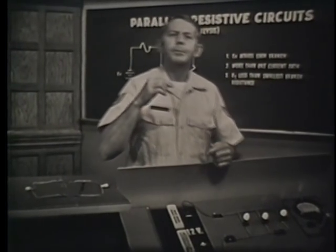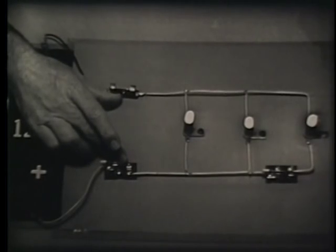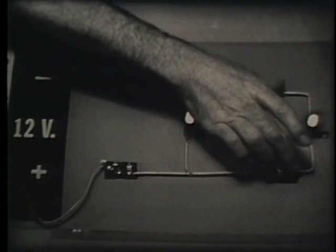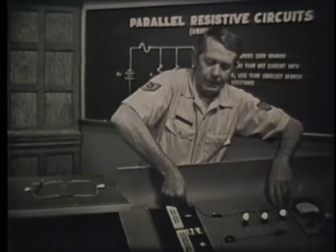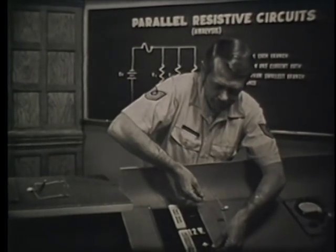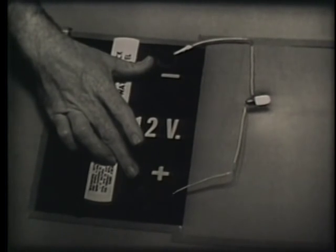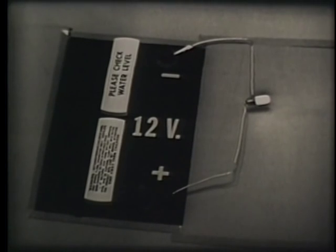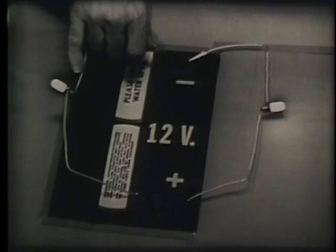So the parallel circuit has more than one path for current. But what about the voltage? Notice on this trainer that each branch is connected directly across the battery. Let's investigate this further by building a parallel circuit. I'll start by connecting one bulb across the battery. When the bulb is placed in this manner, it's pretty obvious that the applied voltage is across the bulb. If I place a second bulb over here like this, it's obvious that I still have the applied voltage across each light, because each of the branches is connected directly across the battery.